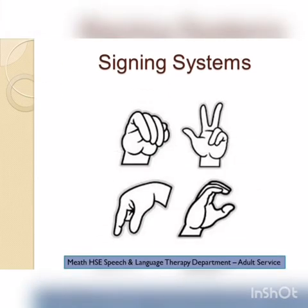Signing systems involve sets of hand or body movements that represent words. Signing systems vary in complexity. Examples of signing systems are sign language for the deaf and Makaton.